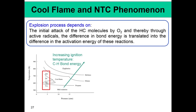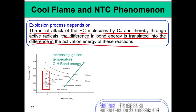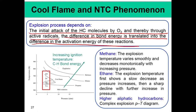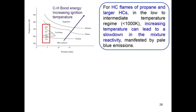For cool flame and NTC phenomena, propane and higher hydrocarbons show a regime called cool flame and NTC. The explosion process depends on the initial attack of hydrocarbon molecules by oxygen and active radicals. The difference in bond energy translates into the difference in activation energy. Higher aliphatic hydrocarbons have complex, non-monotonic explosion pressure-temperature diagrams. At constant pressure, at point A there is only mild oxidation with no temperature change; at point B there is explosion characterized by pale blue emission from formaldehyde — the cool flame regime.